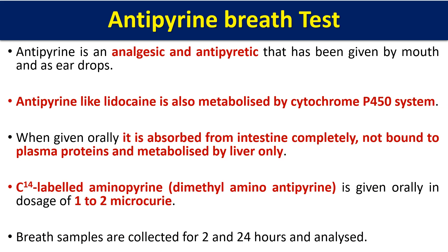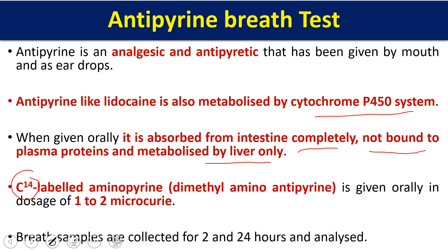The third test is the antipyrin breath test. Antipyrin is a drug used as an analgesic, given orally or as ear drops. Like lidocaine, antipyrin is also metabolized by cytochrome P450. If cytochrome P450 is working fine, antipyrin will be metabolized; otherwise it will not. When given orally, antipyrin is completely absorbed from the intestine, is not bound to plasma proteins, and is metabolized only by the liver.